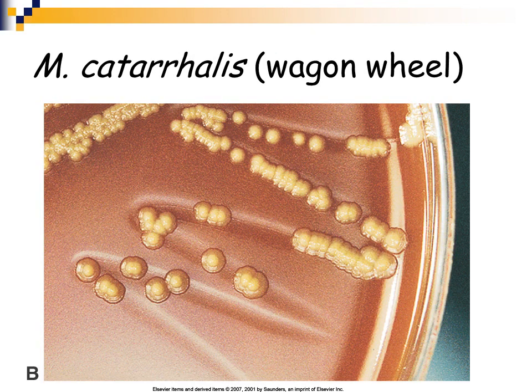Here is the organism growing on chocolate agar. The organism has what's called a wagon wheel appearance after 48 hours of growth — it will have a denser area in the center and a somewhat lighter, less dense area around the outside, and it sort of looks like a wagon wheel. We're now going to move on to the last part of our gram-negative cocci lecture.